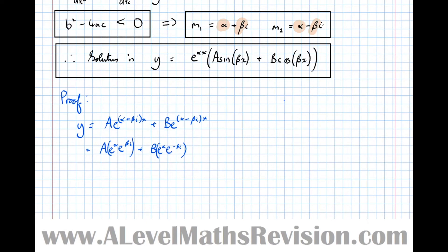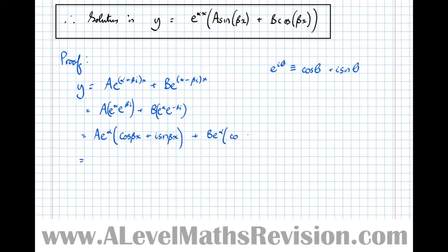So let's expand those using the identity e^(iθ) is identical to cos(θ) + i sin(θ). So that's equal to Ae^(αx) cos(βx) + i sin(βx). Then we've got Be^(αx). And then we've got cos(-βx) + i sin(-βx).